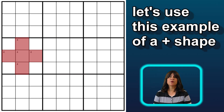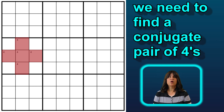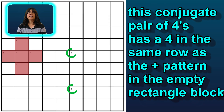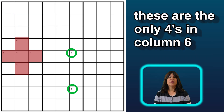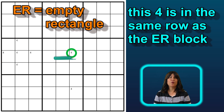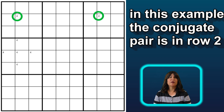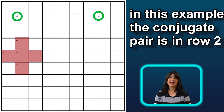Using this cross pattern example, we need to find a conjugate pair of 4s with one of the pair in either this row or this column. Here is a conjugate pair of 4s in the same row as the empty rectangle block. These 4s in column 6 are the only 4s in the column, so they are a conjugate pair. One of them has to be true and the other has to be false — they can't both be true, and they can't both be false, since they are the only 4s in that column. The conjugate pair can also be in a row with one of the pair in the same column as the column in the empty rectangle block. So now we have the pattern that we need for the empty rectangle strategy.